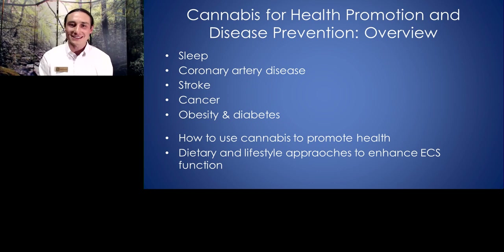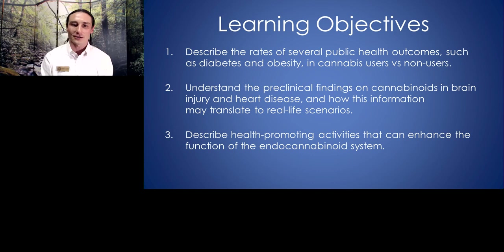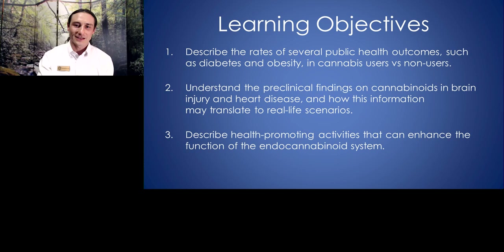Here are today's learning objectives. Number one is to describe the rates of several public health outcomes, such as diabetes and obesity in cannabis users versus non-users. Number two, understand the preclinical findings on cannabinoids and brain injury and heart disease, and how this information may translate to real-life scenarios. Number three, describe health-promoting activities that can enhance the function of the endocannabinoid system.